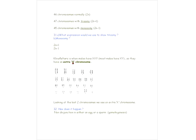Gametogenesis is the formation of gametes — egg or sperm. This takes place in the reproductive organs. Spermatogenesis is the production of sperm, and oogenesis is the production of an egg. These are special types of gametogenesis. The genesis or birth of gametes — if you think of the word genesis as the beginning, that can help you remember it.